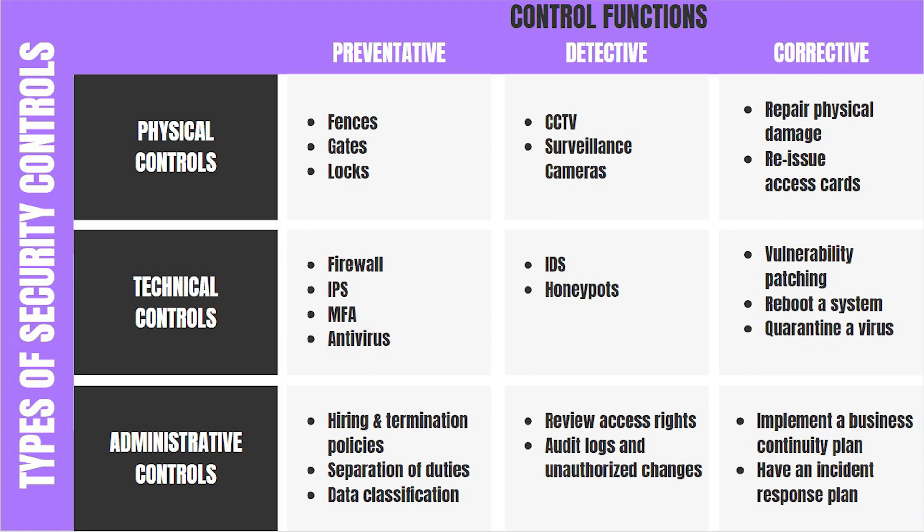Technical, admin, and physical controls are simply a way to categorize controls further to better assign responsibilities to different job roles. Physical controls include things like fences, gates, and cameras. Technical controls include firewalls and antivirus. Admin controls include separation of duties and audits. Compensating controls are measures placed because a proper control can't be implemented, either due to cost or other reasons, to lower risk.